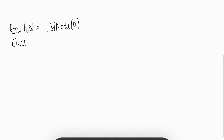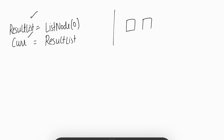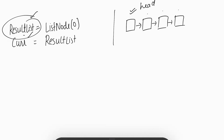We have a variable called 'current' pointing at result_list. The reason we need two pointers — current and result_list — is that we need to move through the list, and if we only use result_list and keep moving it forward, we'll lose the reference to the head. That's why we need both: current to traverse, and result_list to keep the head reference.